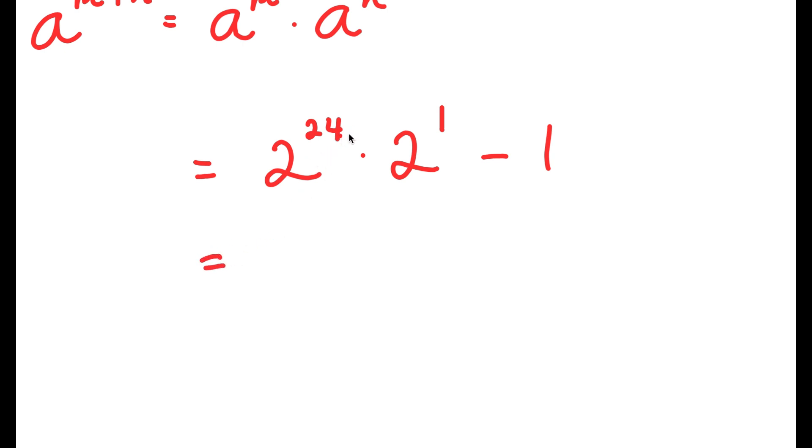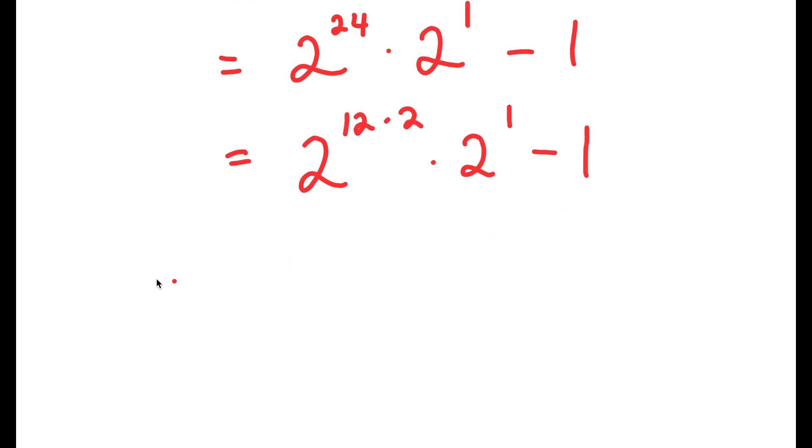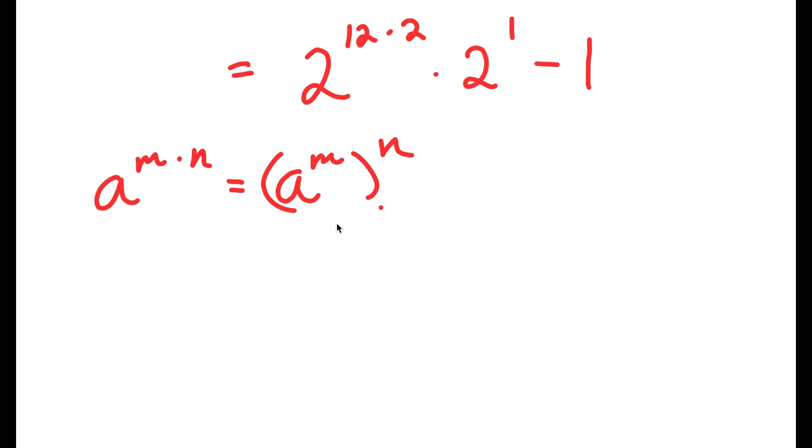2 to the power of 24, how do we simplify this and make it even smaller? I can rewrite this as 2 to the power of 12 times 2. And another property of exponents is that if I have something in the form a to the power of m times n, this is equal to a to the power of m to the power of n.